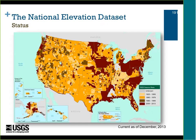This is a status map of where the NED is right now, current as of about five months ago. It shows the source dates in the legend on the right, and it really demonstrates how old this data is getting. It also shows how we had this ad hoc approach to collecting data in the past, and just how old the data really is.